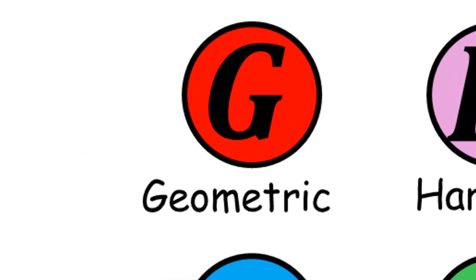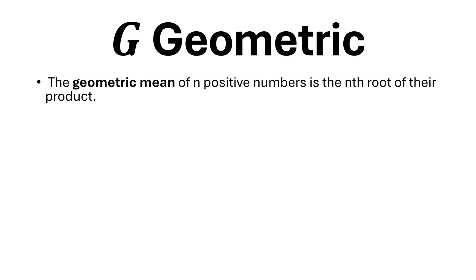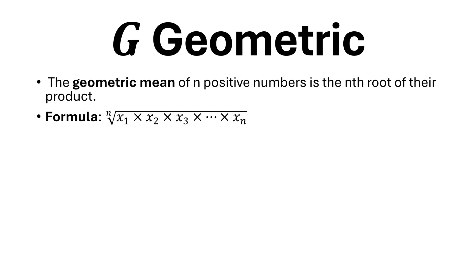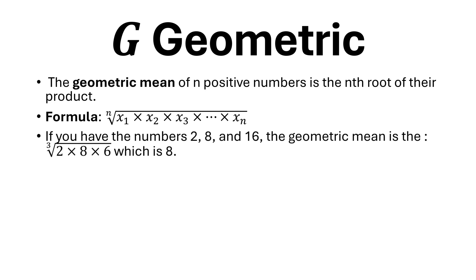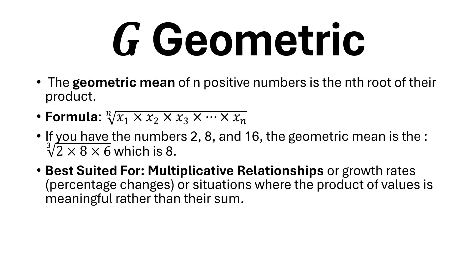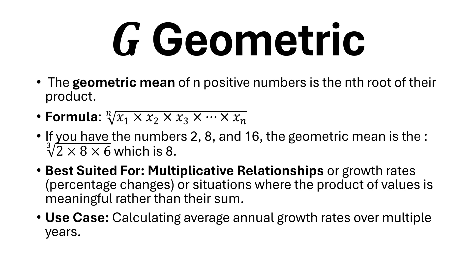Geometric mean. The geometric mean of n positive numbers is the nth root of their product. The formula is as shown. If you have the numbers 2, 8, and 16, the geometric mean is calculated as shown, equal to 8. Best suited for multiplicative relationships or growth rates, percentage changes, or situations where the product of values is meaningful rather than their sum. Use case: calculating average annual growth rates over multiple years.